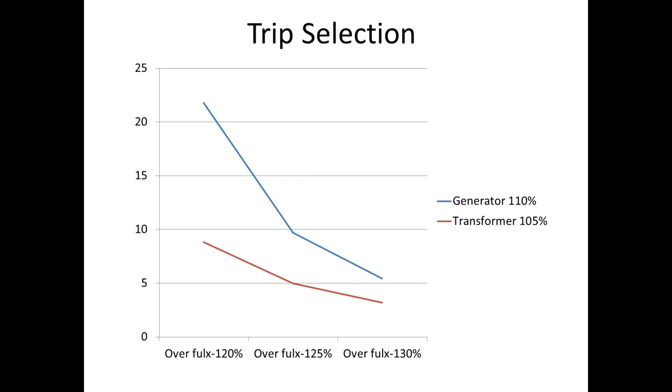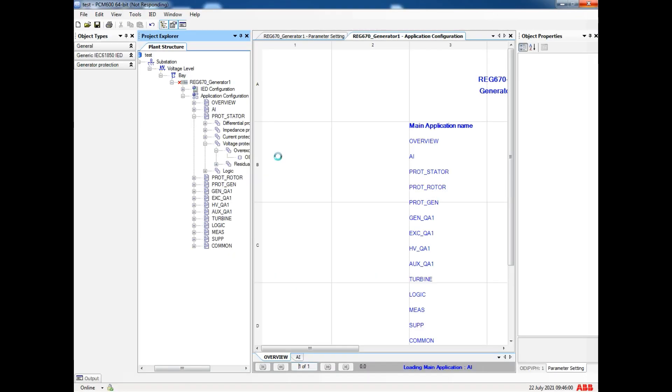The tripping of transformer should be faster than generator. This is the sample curve for over flux time coordination between transformer and generator.